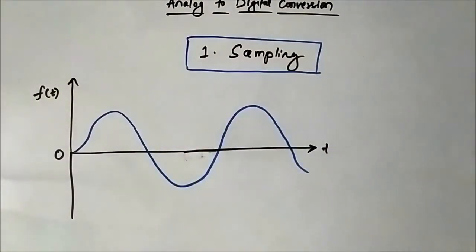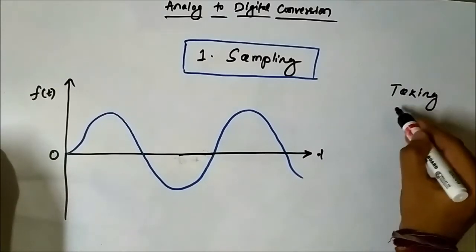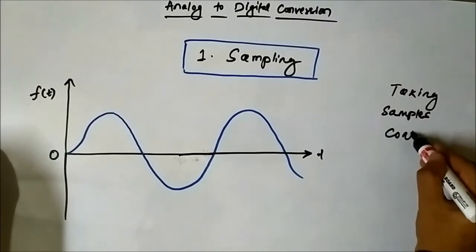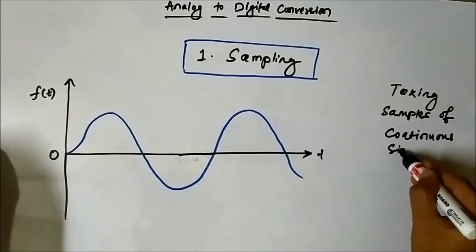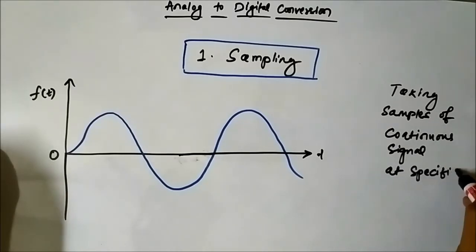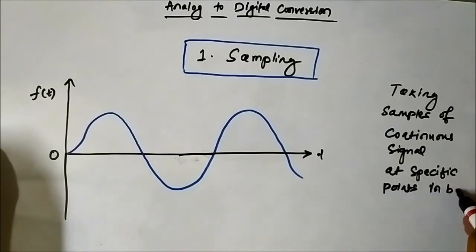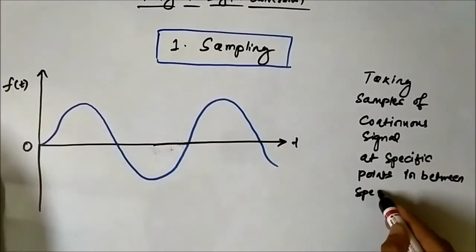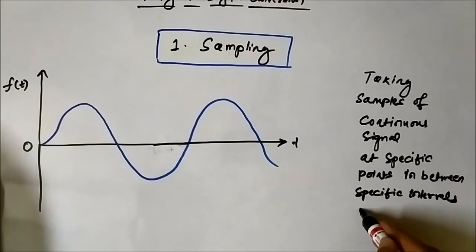The process of sampling involves taking samples of the continuous signal at specific points — at specific intervals of time. This is the process of sampling.